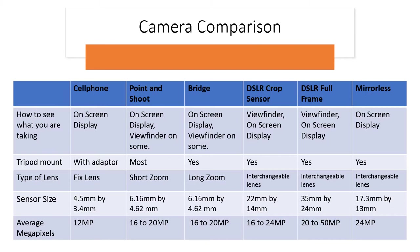Here you can see the different types of cameras and what they do. A cell phone has an on-screen display, can attach to a tripod with an adapter, has a fixed lens, and an average sensor size and megapixels. Point-and-shoot and bridge cameras basically have an on-screen display, some have a viewfinder, and most have a tripod mount. The point-and-shoot has a short zoom where the bridge camera has a longer zoom, and the sensor sizes and megapixels are about the same.